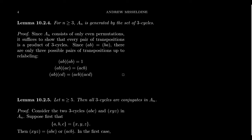Since Aₙ consists only of even permutations, it suffices to show every pair of transpositions is a product of 3-cycles, because every permutation in Aₙ is a product of an even number of transpositions — pairing them up. When it comes to pairs of transpositions, there are three possibilities. First: the two transpositions are identical, like (ab)(ab) = identity. The identity can be expressed as a 3-cycle times its inverse, e.g., (123)(132), so it's a product of 3-cycles.